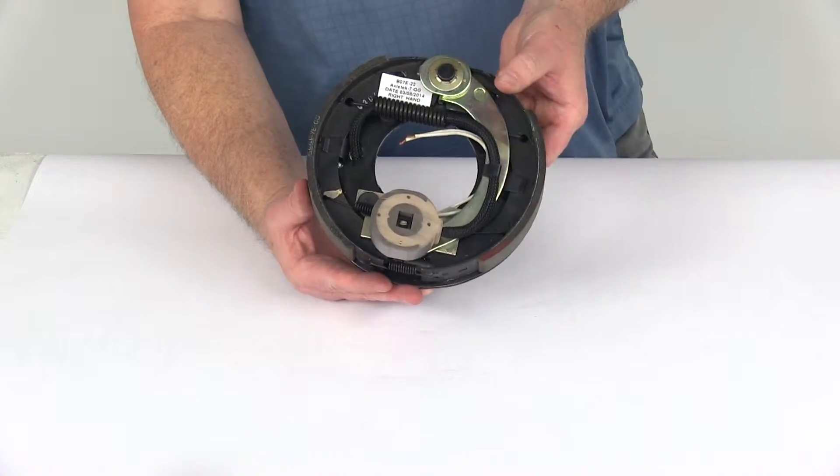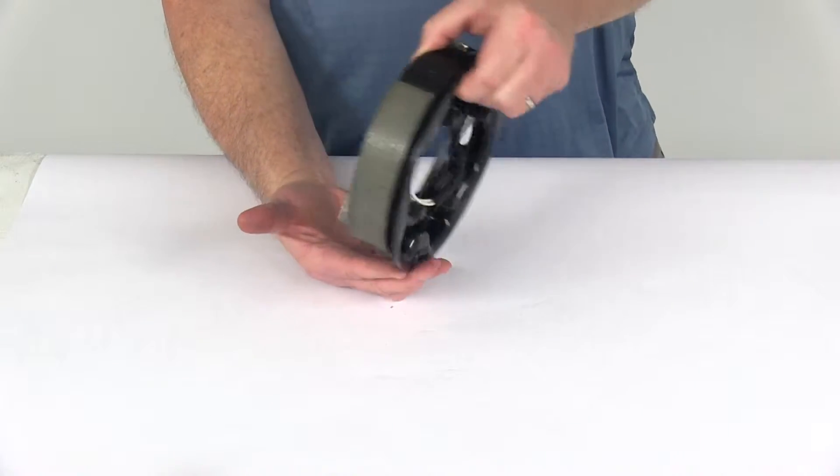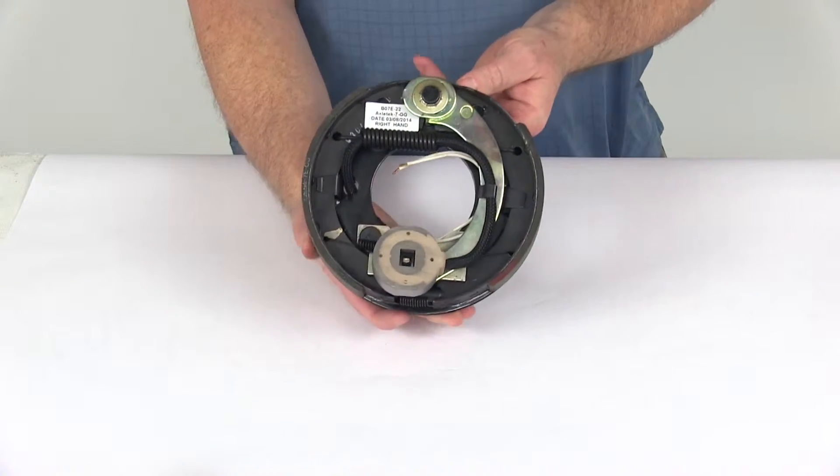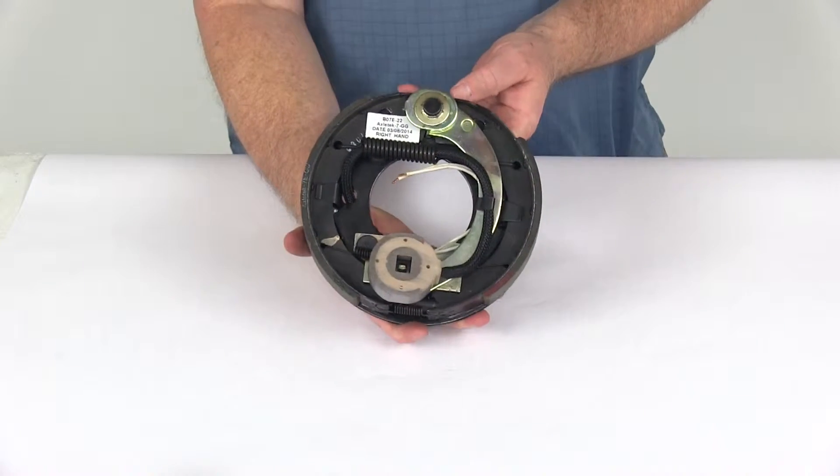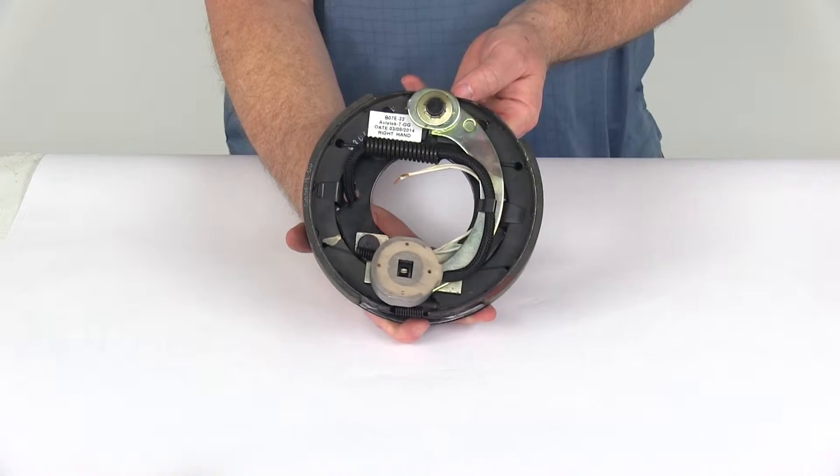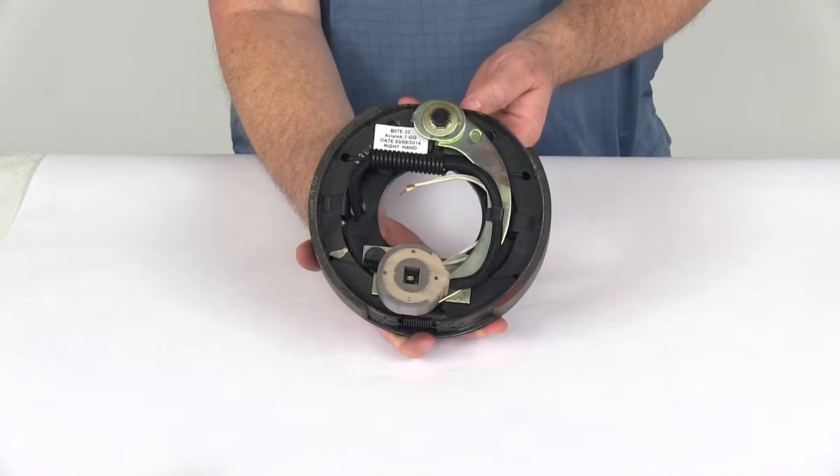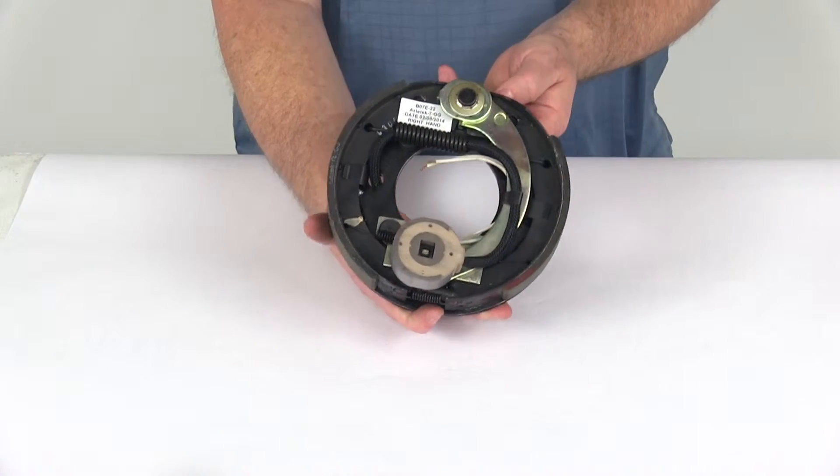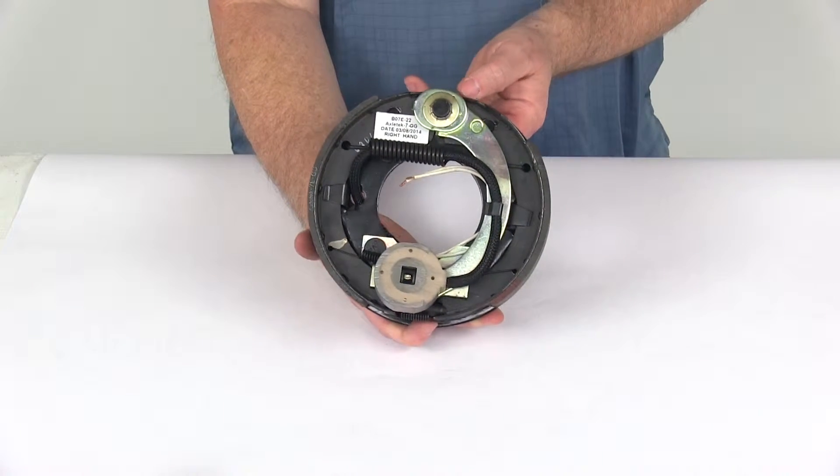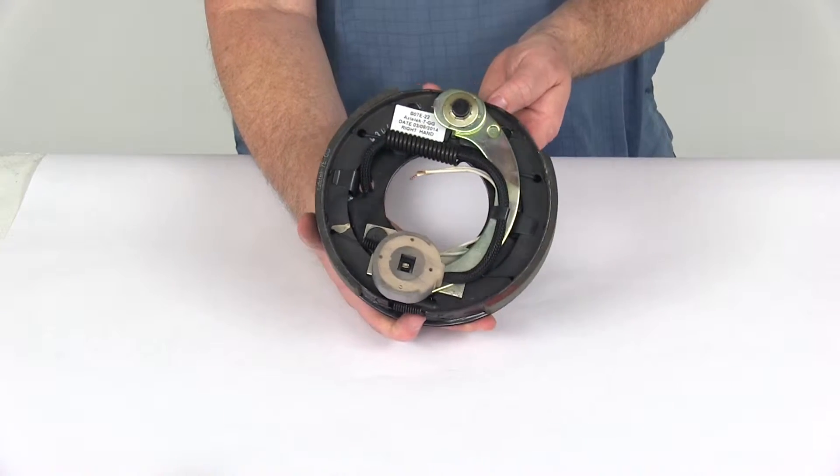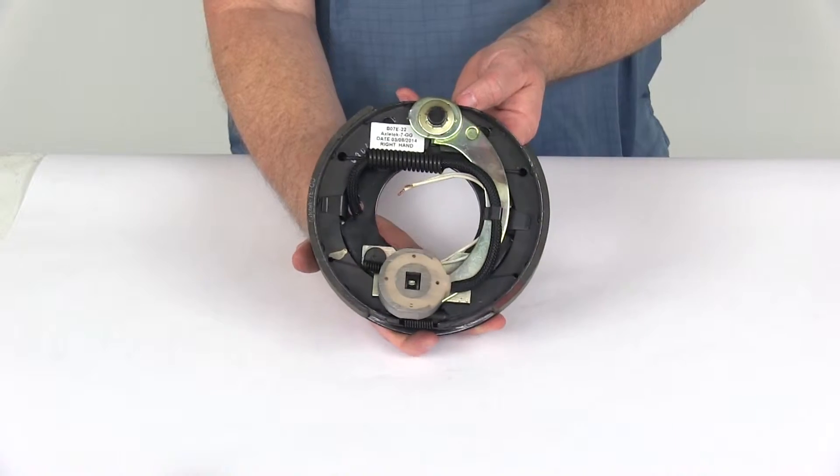Today we're going to take a look at the 7-inch right-hand electric brake assembly for 2,000 pound axles. Electric brakes are a lot easier to install and offer more user control than hydraulic brakes. They only require an electric brake controller to operate, which we sell separately on our website. There's no actuator or hydraulic lines necessary with electric brakes.